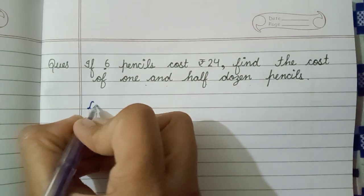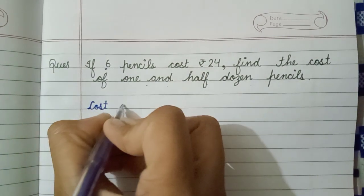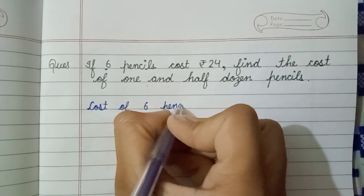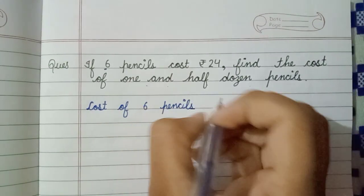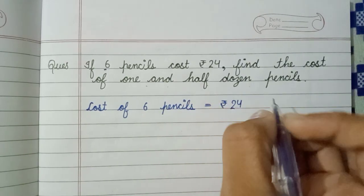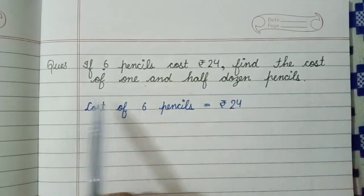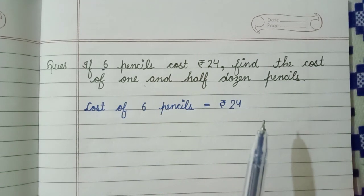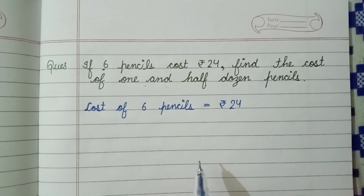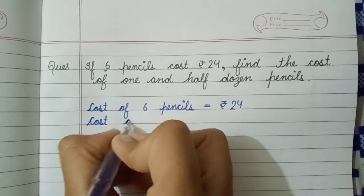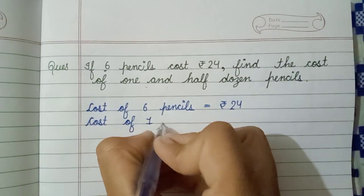The cost of six pencils is equals to rupee 24. Now we have to find the cost of one and half dozen pencils, so first we have to find the cost of one pencil.